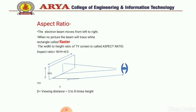Now, what is viewing distance? Viewing distance is the distance of human eyes to the picture. It should be 3 to 8 times the TV height.